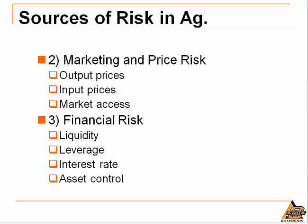The second major category is marketing and price risk. Commodity producers face output price movements that can negatively impact the bottom line. Input prices — fertilizer, fuel, feed, and other inputs — are subject to wide swings that can certainly affect farm financial outcomes. Finally, access to markets can pose risks in certain instances. If a farmer produces a specialized product with only one or two viable market outlets, they can be impacted if a buyer experiences financial hardship, goes out of business, or decides they no longer want that product.